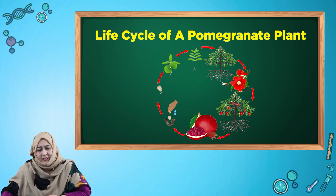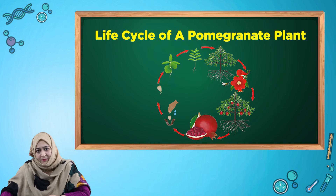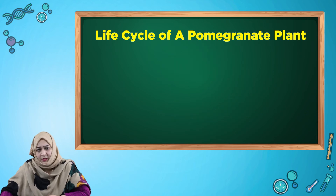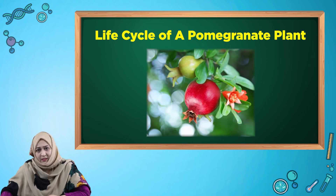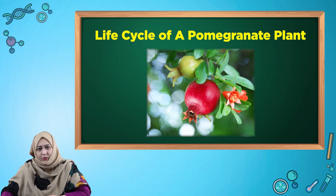Look at the life cycle of the pomegranate plant. First, the seed is dispersed and, if conditions are favorable, the seed turns into an embryo, then becomes a young plant, growing into a bigger one. After that, the plant grows flowers — as you can see, this plant has brightly colored flowers that are pollinated by insects. After pollination takes place, the flower is fertilized and the fruit starts to grow. As you can see, the flowers have turned into fruits.